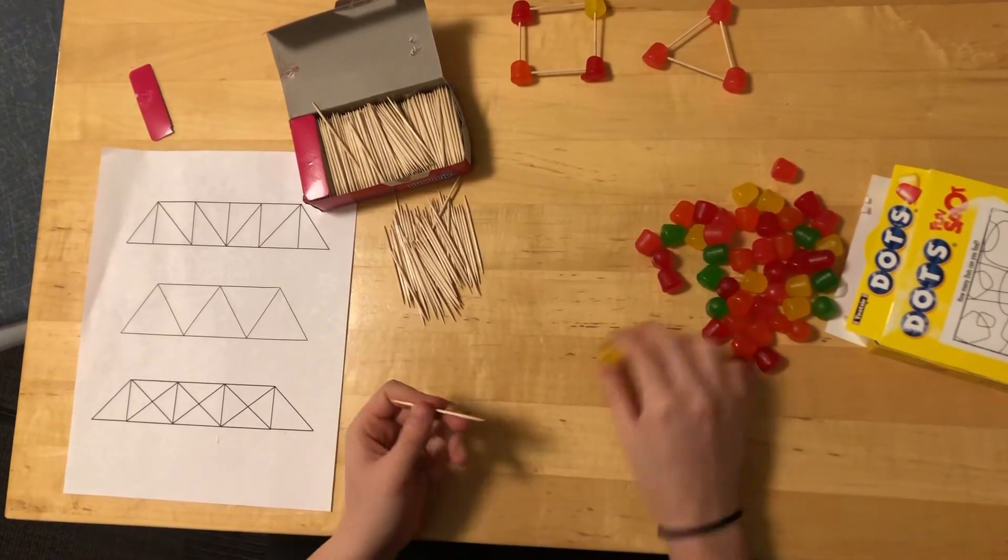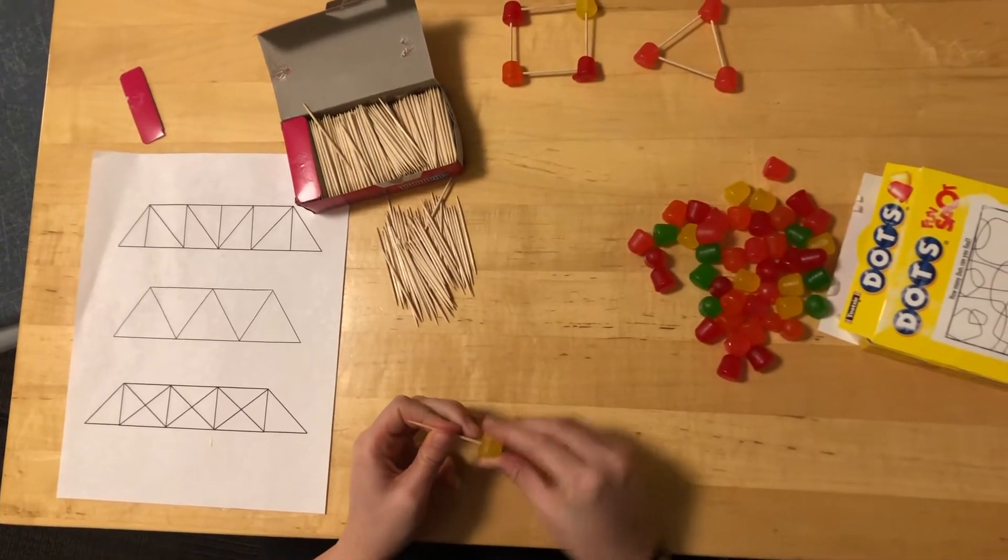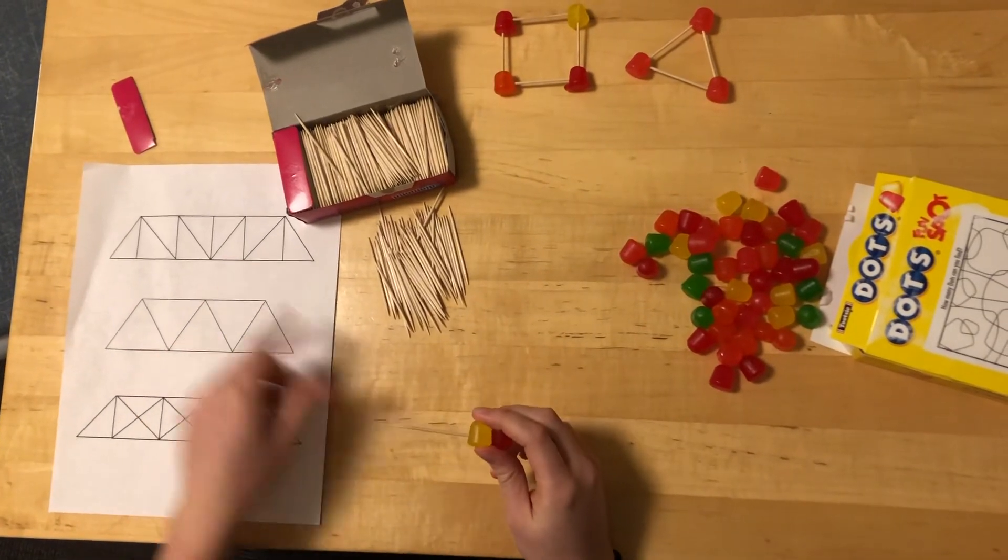So we'll start by taking toothpicks and attaching gumdrops to each side, and each toothpick represents one line on the diagram.